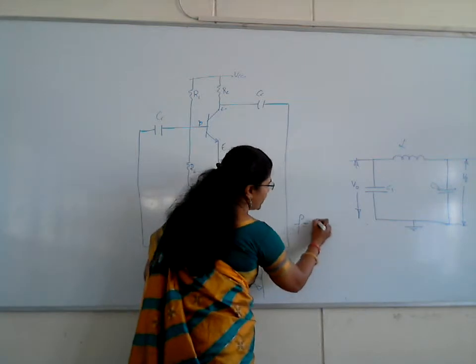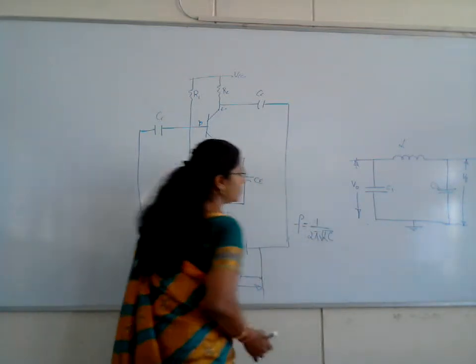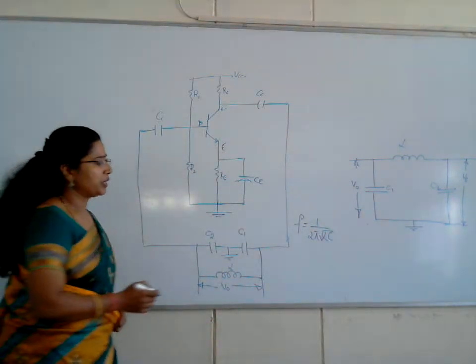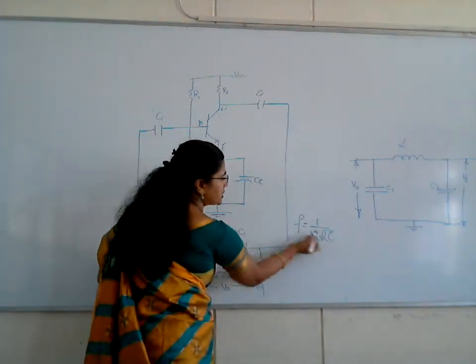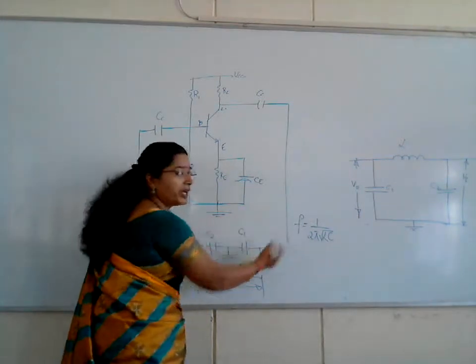In this circuit, the frequency is dependent on L and C by the formula 1 over 2π√LC. By designing the values of L and C, you can achieve the oscillations of any frequencies.